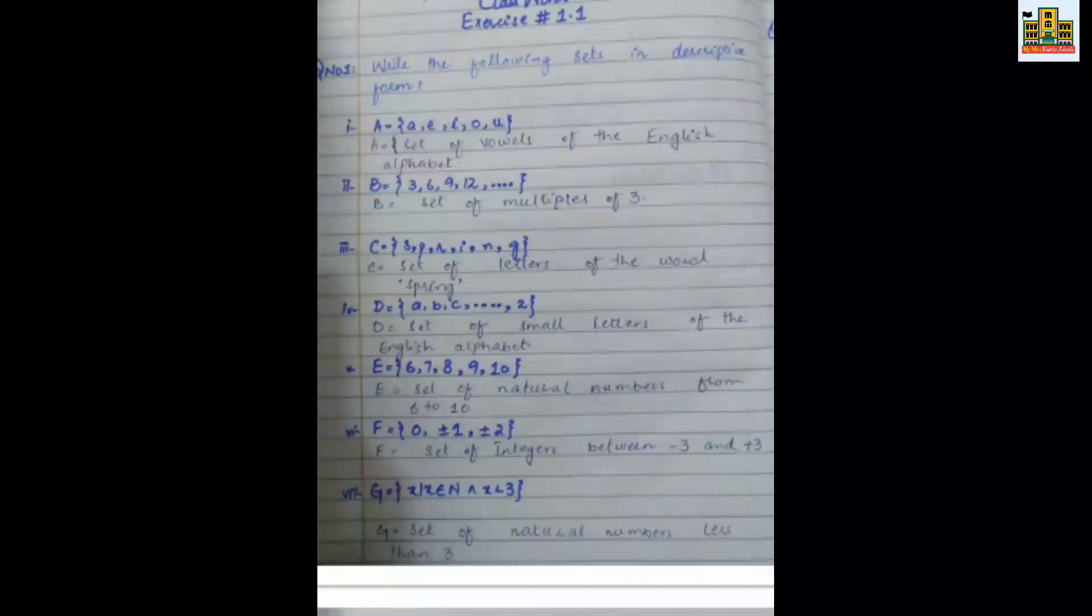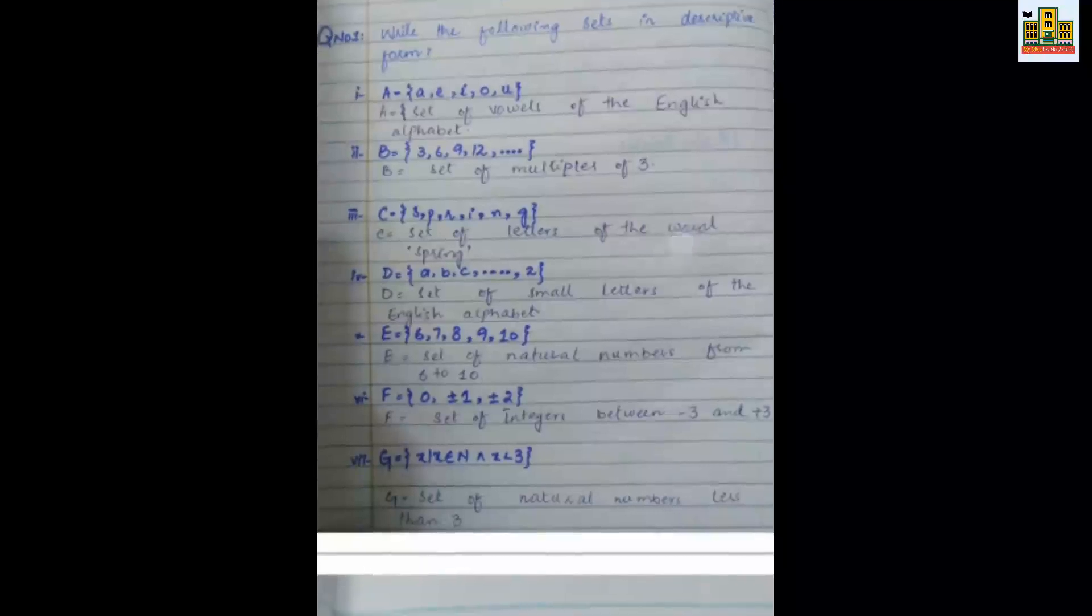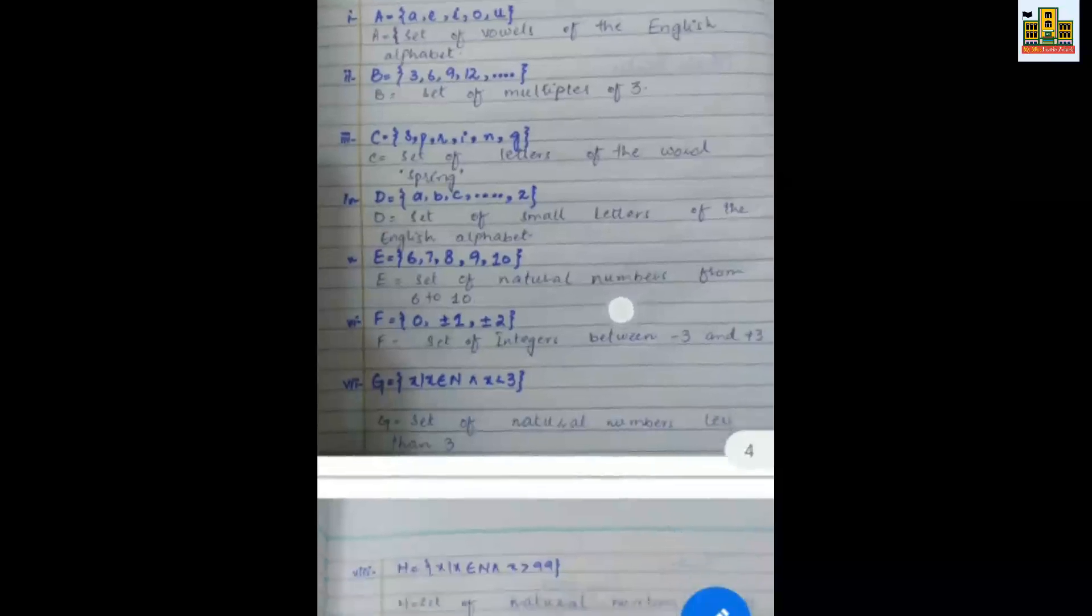Is a set of letters of English alphabet. You have to know that if you have a to z, then you simply mention it. Instead of a to z, you have to directly mention it: you have the set of small letters of English alphabet. Now in question number five, E has given 6, 7, 8, 9, and 10. So these are a set of natural numbers from 6 to 10.